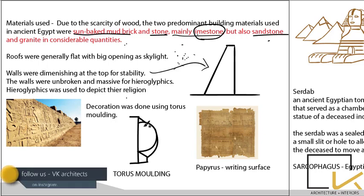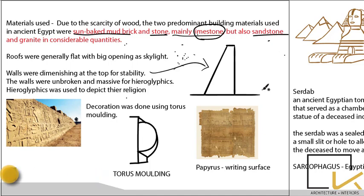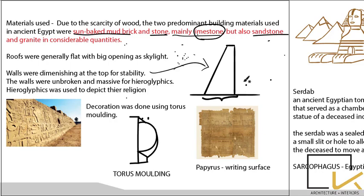Roofs were generally flat with big openings as skylights — flat roofs for Egyptian temples with a skylight. Walls were diminishing at the top, meaning the base was wider than the top — so the wall was tapering inward as it rose.